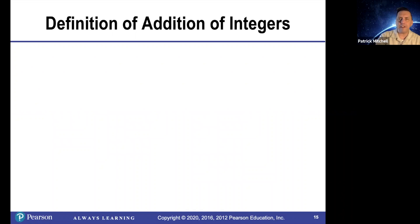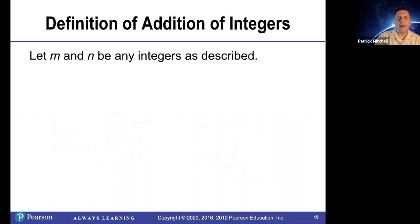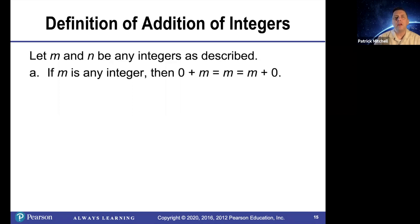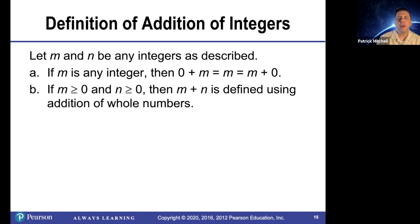The definition of addition of integers. Let m and n be any integers. If m is any integer, then zero plus m and m plus zero are both equal to m. If m and n are both greater than or equal to zero, then m and n are whole numbers, so we already know how to do that.